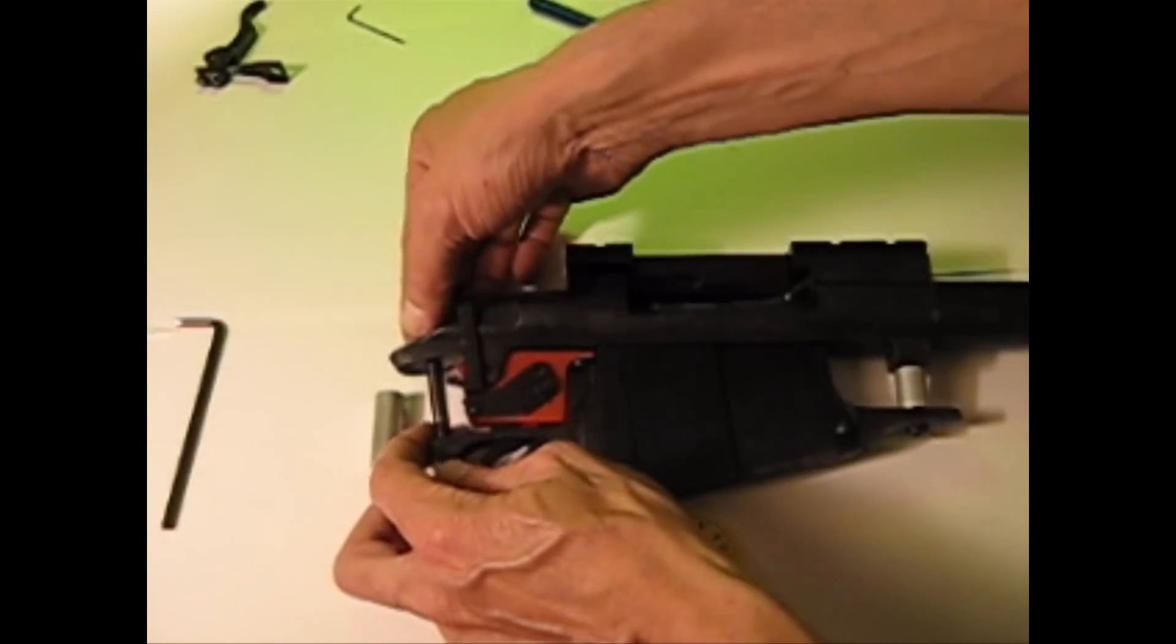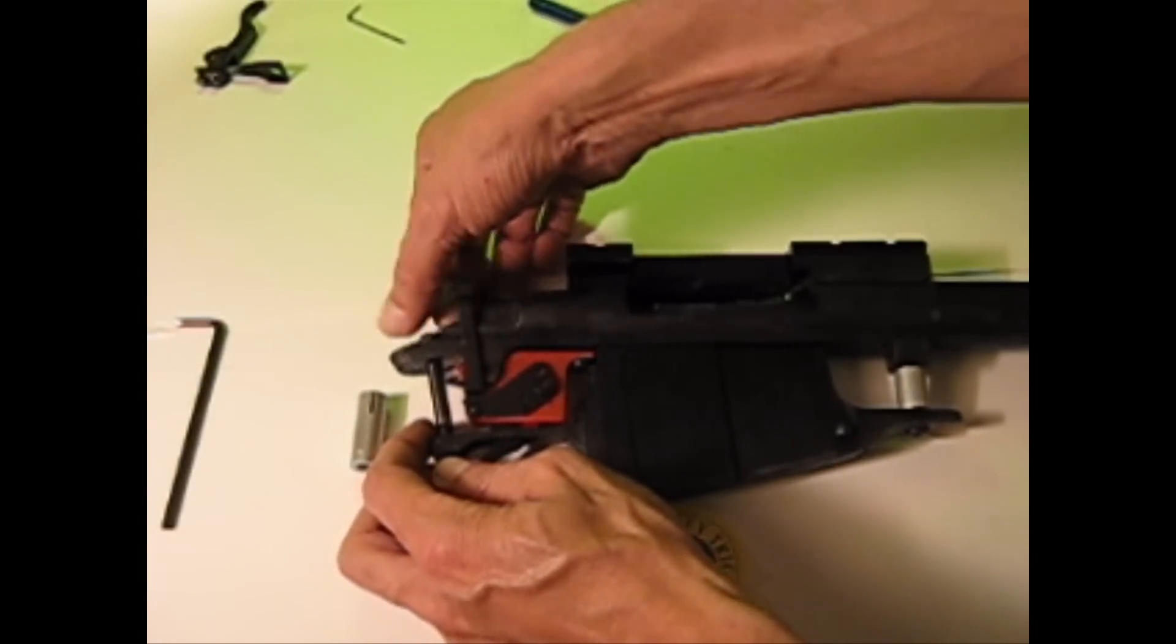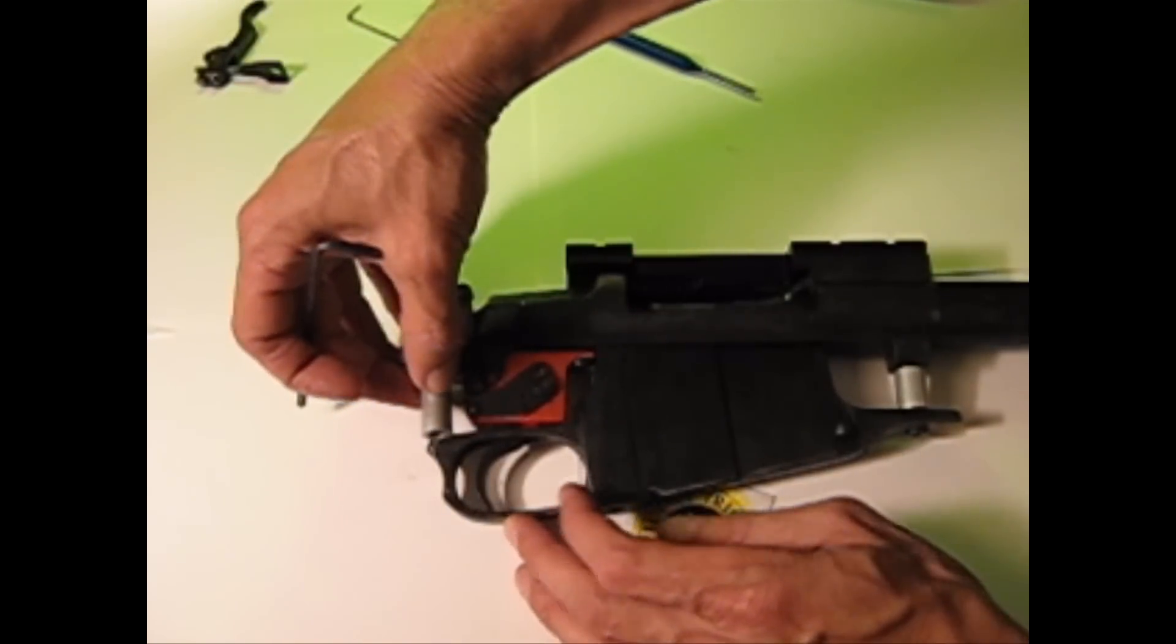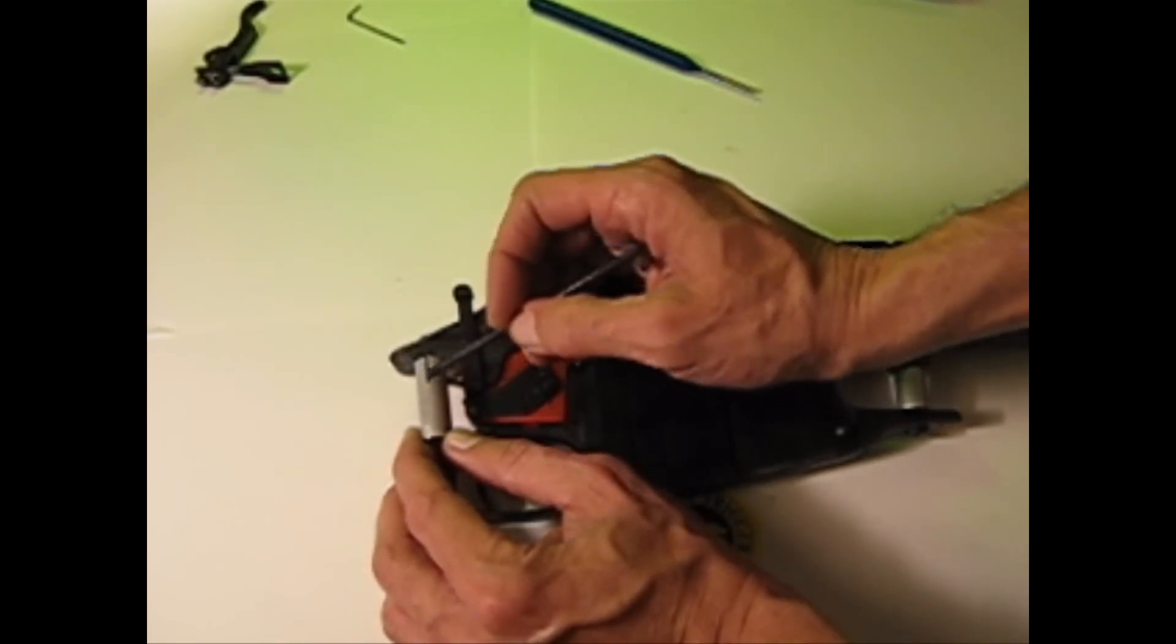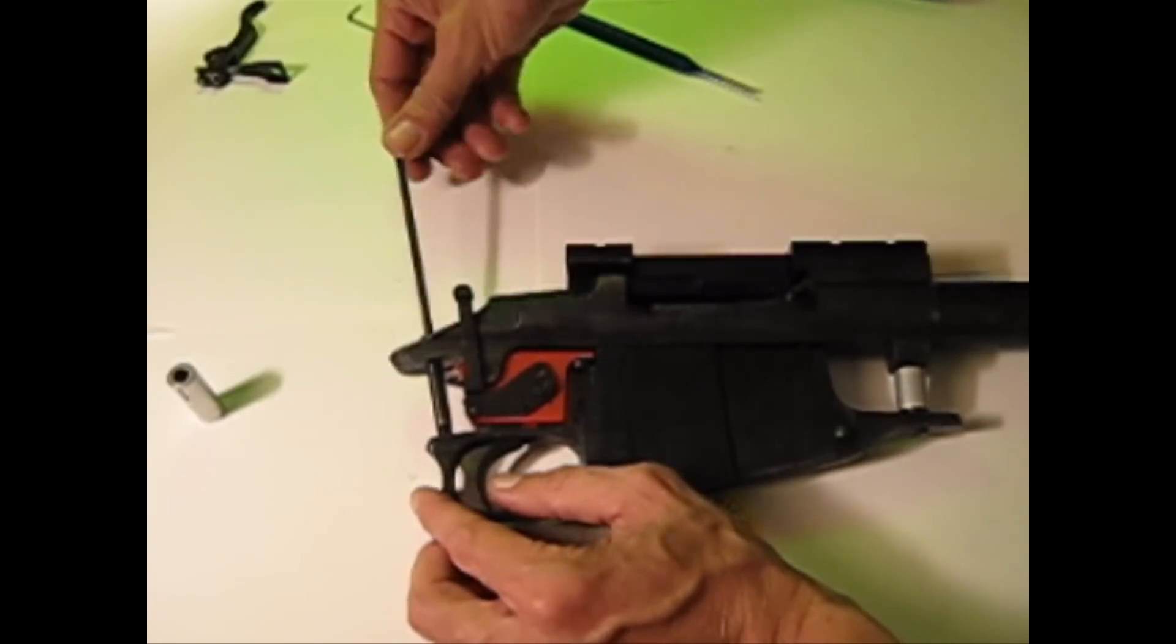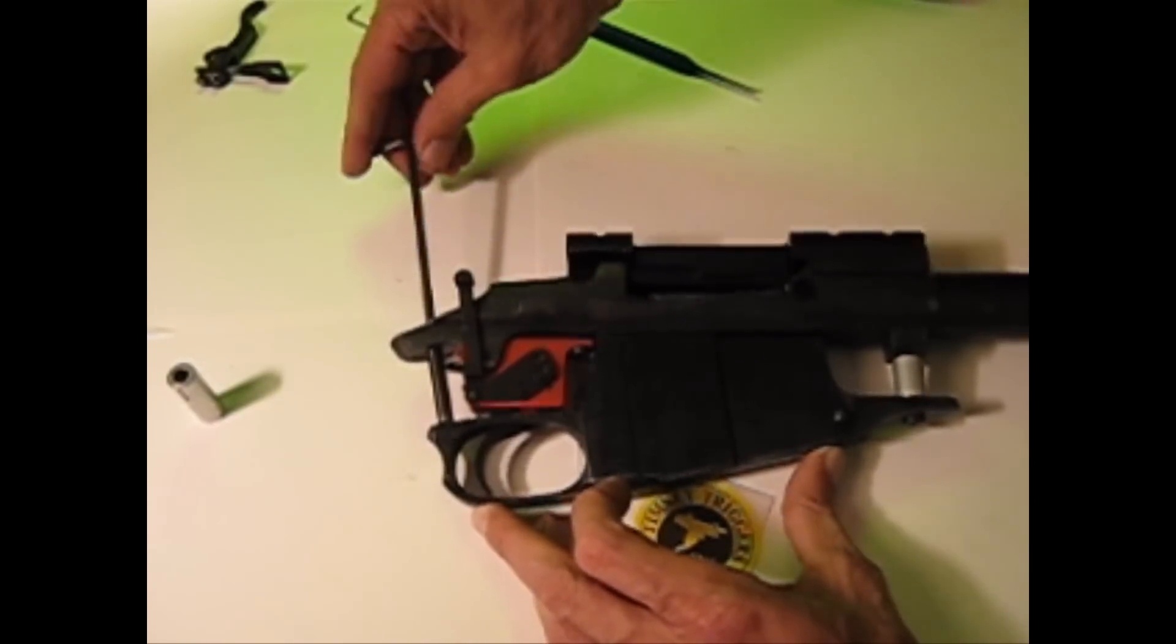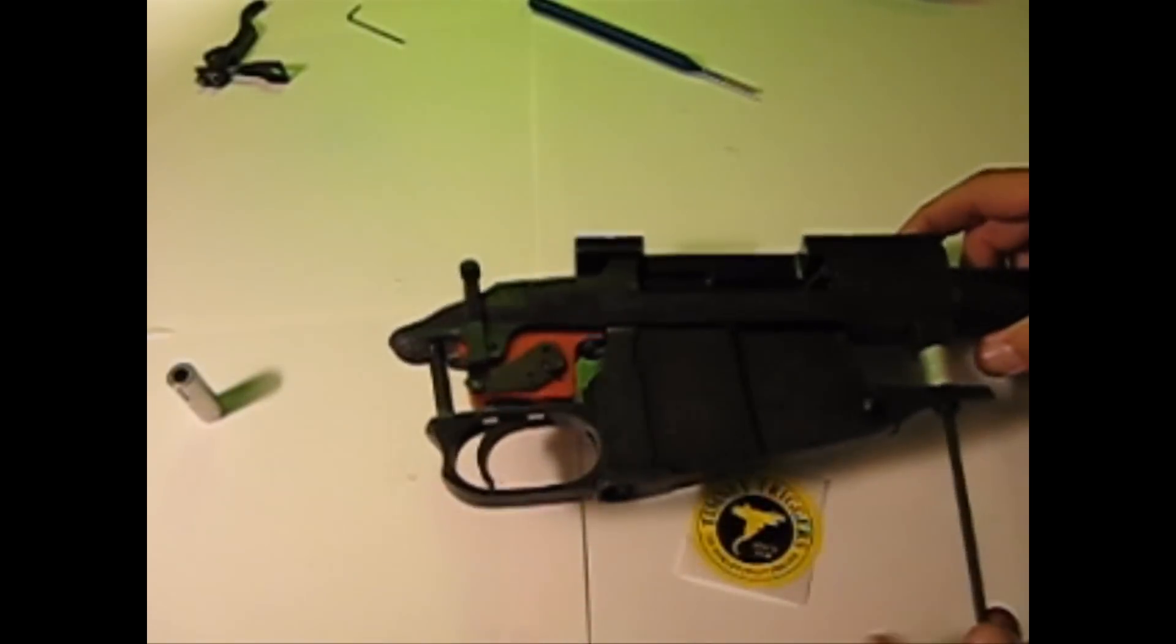You can see the clearance on the trigger actuator sear. It's very precise and minimal. So I'm going to go ahead and tighten these down. These are not stock posts, courtesy of Rock Solid Industries, along with the bedding pillars and the scope mount.